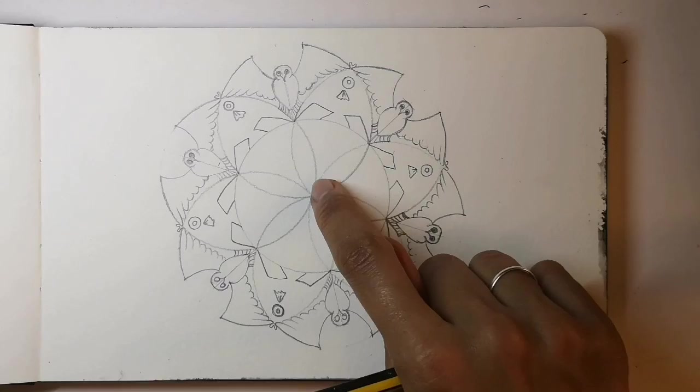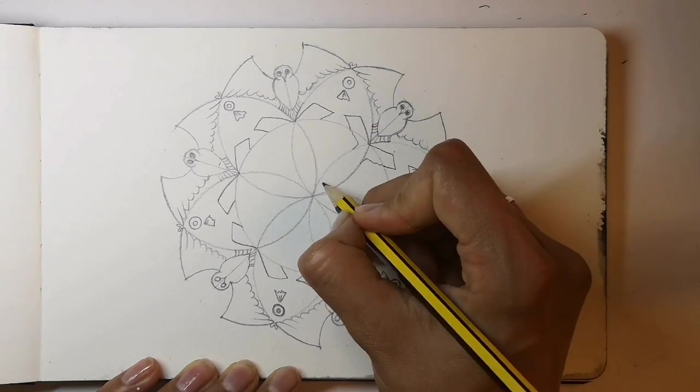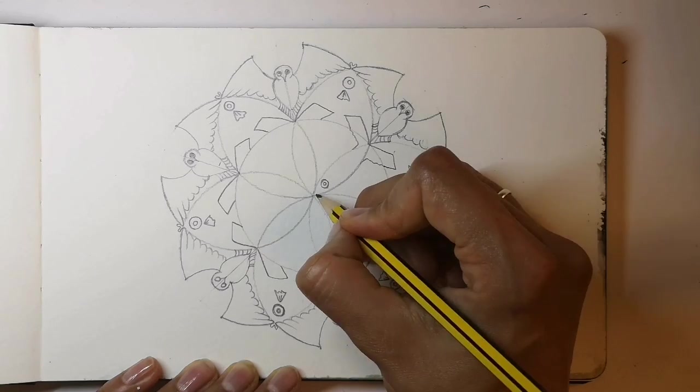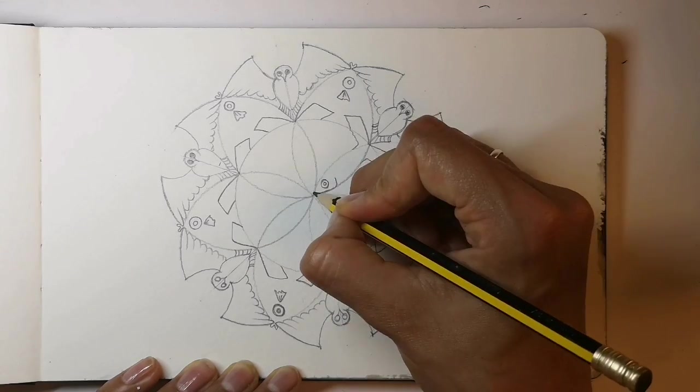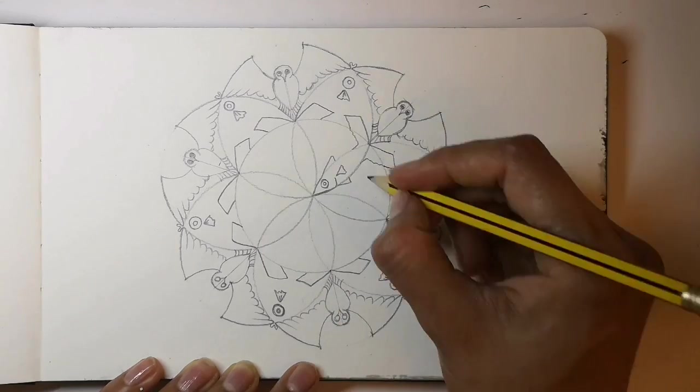Now the fish pointing inwards. Carefully do the tail, the eye, the fish's gills, the dorsal fin, the pectoral fin and the side fin.